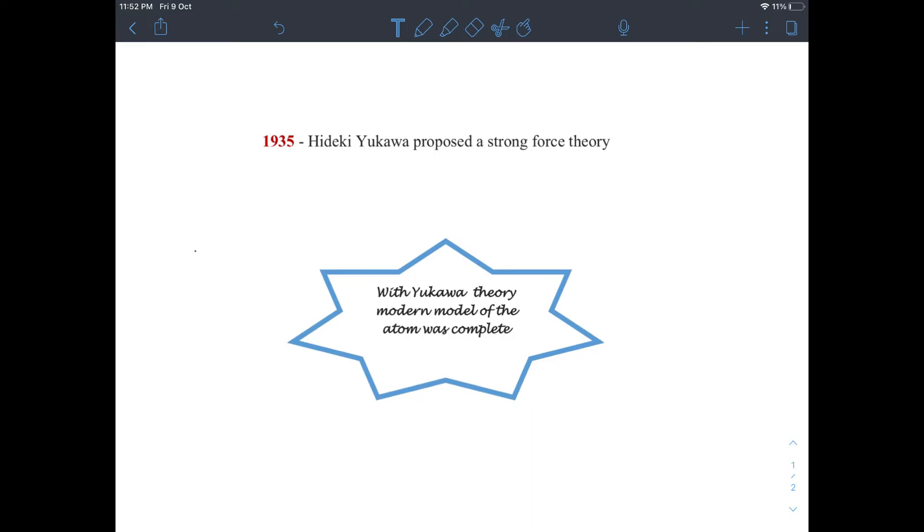In 1935, Yukawa proposed a strong force theory for the nucleus and explained how the nucleons are held together inside the nucleus. According to Yukawa, the force among the nucleons is mediated by a virtual particle, and this force prevents the nucleon to fly off. Later, the discovery of pi-meson showed that it has all the properties of Yukawa particle. With Yukawa theory, the modern model of the atom was complete.